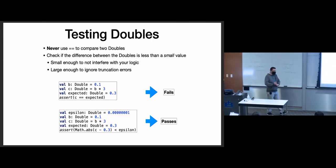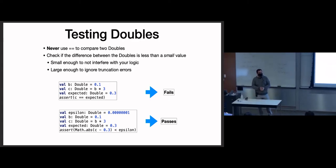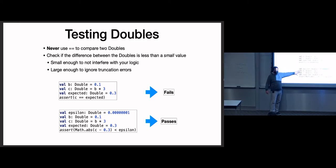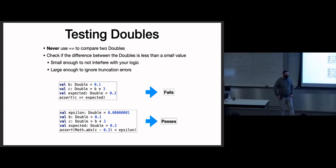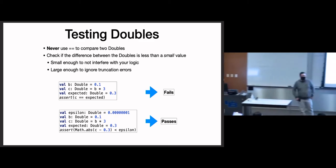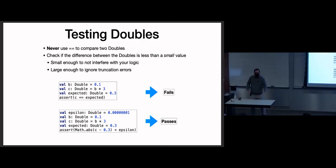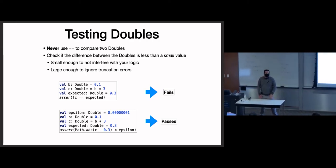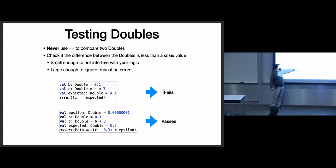Testing doubles: never use ==. Get Task 2 done before the expected deadline. A large portion of the class got the expected deadline for Task 1 and I'd love to see that for Task 2. Use tolerance-based comparison for your doubles — that's the big thing for Task 2. If AutoLab gave you credit using ==, that's a gap in my grader; it'll be updated next semester, but you're not penalized for it.